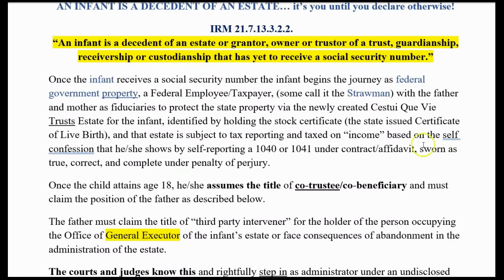Once the infant receives a social security number, the infant begins the journey as federal government property — a federal employee and taxpayer. Some call it the straw man. With the father and mother as fiduciaries to protect the state property via the newly created trust estate for the infant. That birth certificate that was created, created an estate. It's being held in trust and identified by a stock certificate called the certificate of live birth.